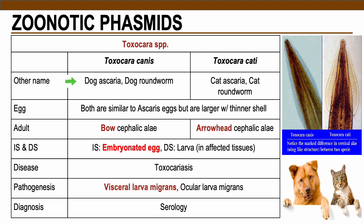Toxocara canis is the dog Ascaris or the dog roundworm, while Toxocara cati is the cat Ascaris or the cat roundworm.